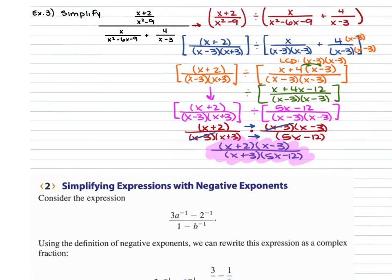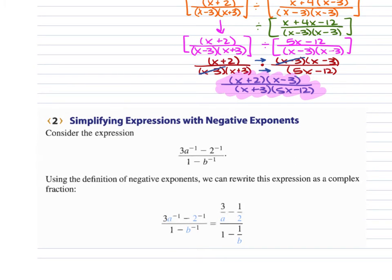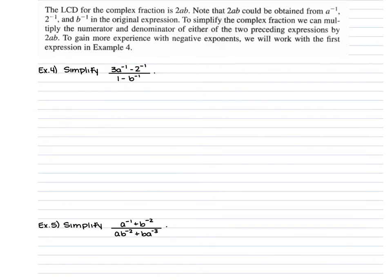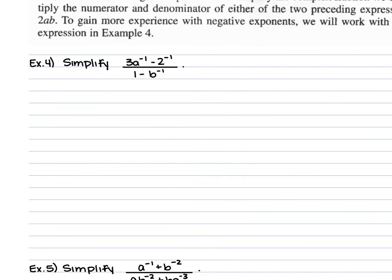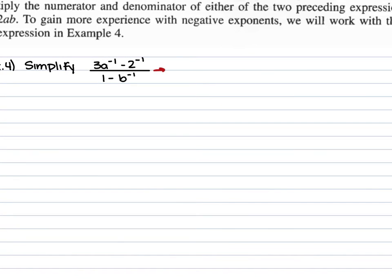The next part of the lesson goes over fractions that include negative exponents. You have to make sure that your exponents are positive in order to work with these. Remember: the term that the negative exponent is attached to — take the reciprocal of it and work from there. In example 4, we're given 3a to the negative first power minus 2 to the negative first power, all over 1 minus b to the negative first power.